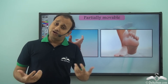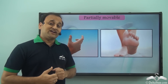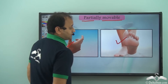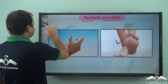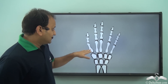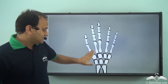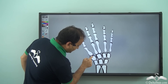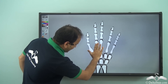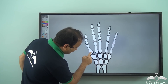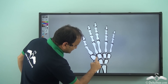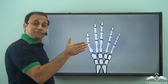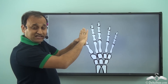Apart from the ball and socket joint, we also have some joints which are partially movable — as in the case of the palm and even our feet. When we move our hand like this, it gets restricted here and here, because the other bones are stopping the movement of each other. As the hand moves, movement is restricted — it gets locked at this position and again at this position. These are partially movable joints because they are restricting each other's movements.